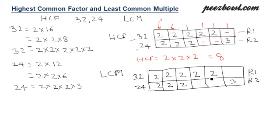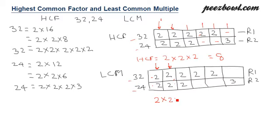For LCM, we multiply all the prime factors present across both rows in all columns, but if a number appears in both rows of the same column, we count it only once. So for columns one, two, and three we take one two each since two appears in both rows. For columns four, five, and six we also take the entry since only one number appears there — no duplicates.